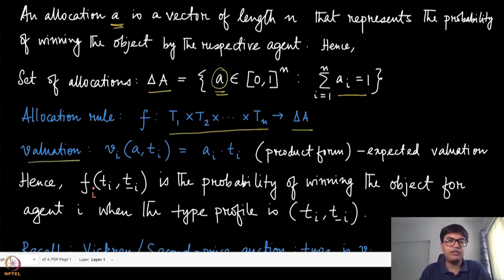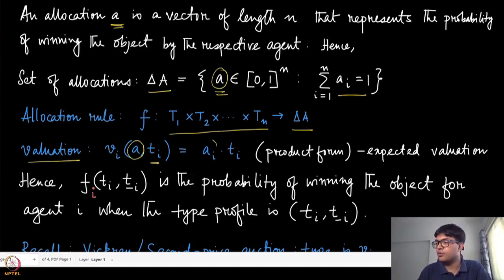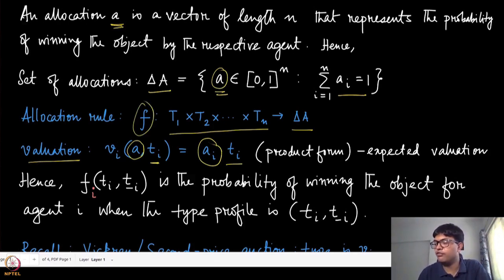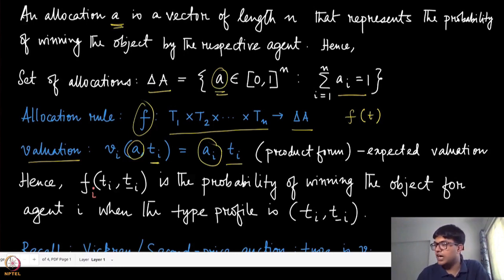We have a valuation function defined on a randomized allocation and an agent's own type. This valuation is just the expected value for that agent for that object: e_i is the probability with which agent i wins the object, and if it wins it gets a value of t_i, so this product gives the expected valuation. When we apply the allocation function f to the type reports of all agents, we get a vector whose i-th component is the probability of winning the object for agent i.